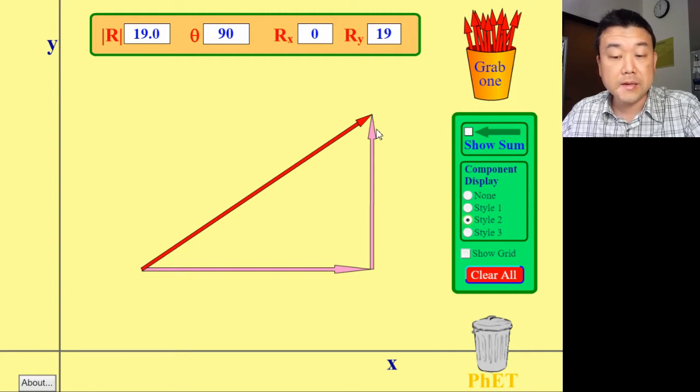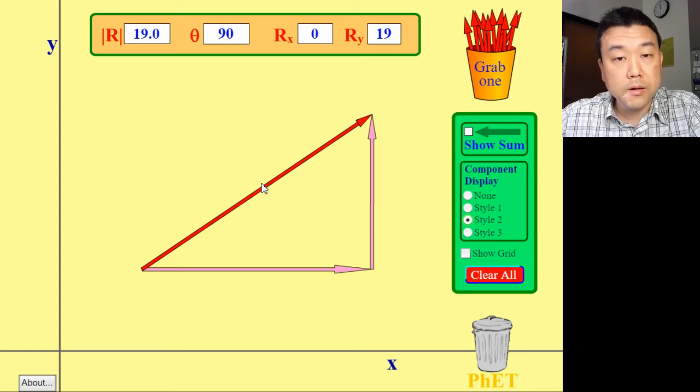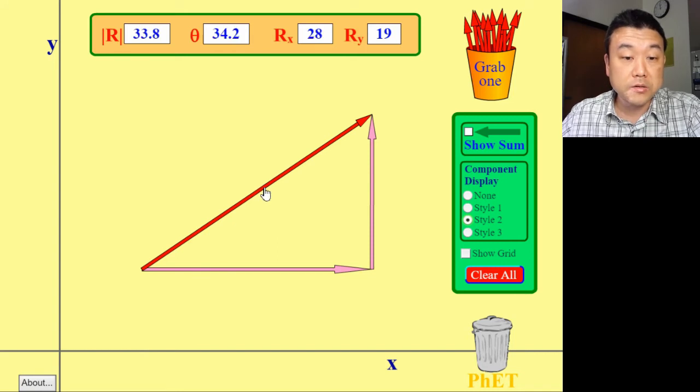How to represent this hypotenuse in terms of the length of the legs, and how to get this angle here if you know some of the sides of this right triangle. You will have some homework problems that will give you some practice on switching between these two representations of the length and direction or by components.